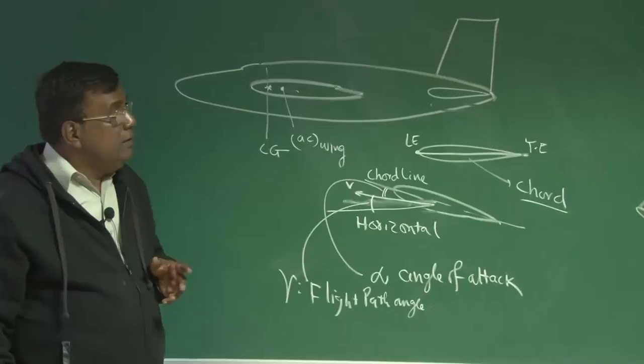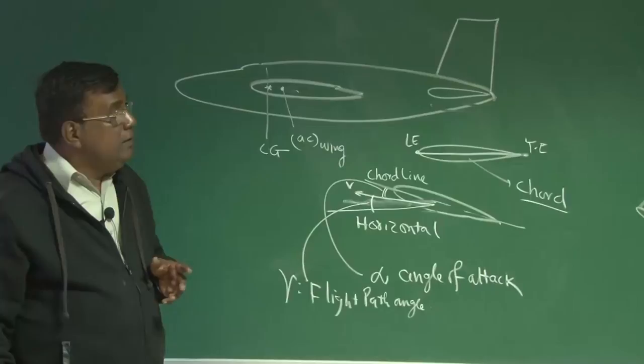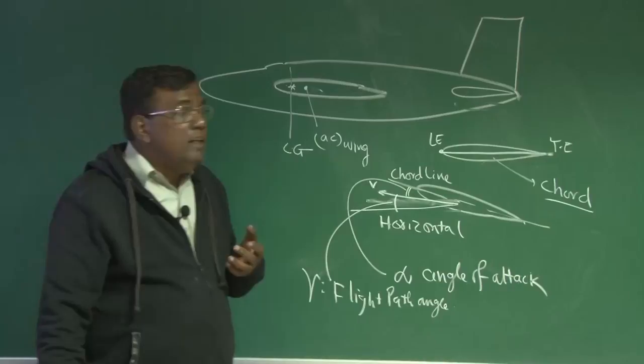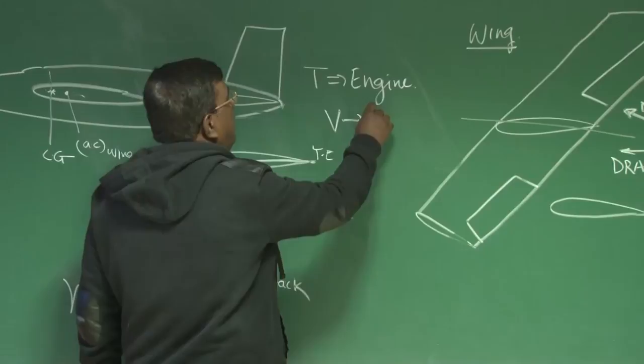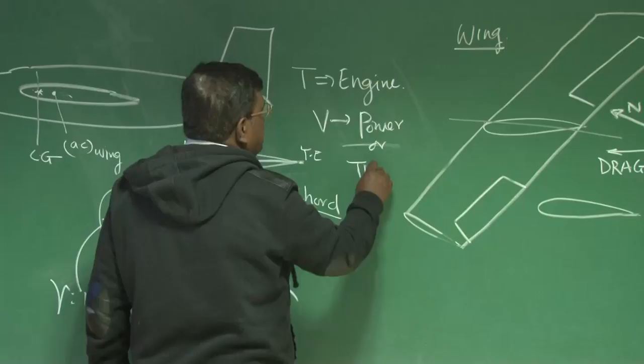Okay, now you understand the lift on the wing depends upon this alpha angle of attack and the speed velocity. Who decides the speed for a given configuration? How much thrust you are generating? That means, from a maintenance point of view, the thrust, who produces thrust? It is the engine, right? So, for a particular V, I need a particular power or thrust from the engine.